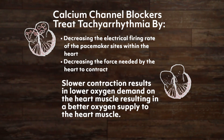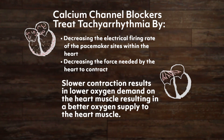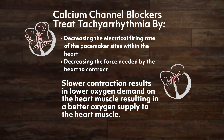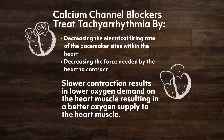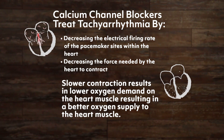Calcium channel blockers treat tachyarrhythmia by decreasing the electrical firing rate of the pacemaker sites within the heart and decreasing the force needed by the heart to contract. Slower contraction results in lower oxygen demand on the heart muscle, resulting in a better oxygen supply to the heart muscle.